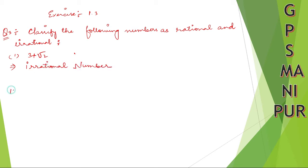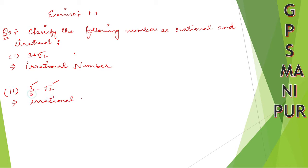Roman number 2: 3 minus root 2. Same thing — root 2 is an irrational number and 3 is a rational number, so this becomes an irrational number.